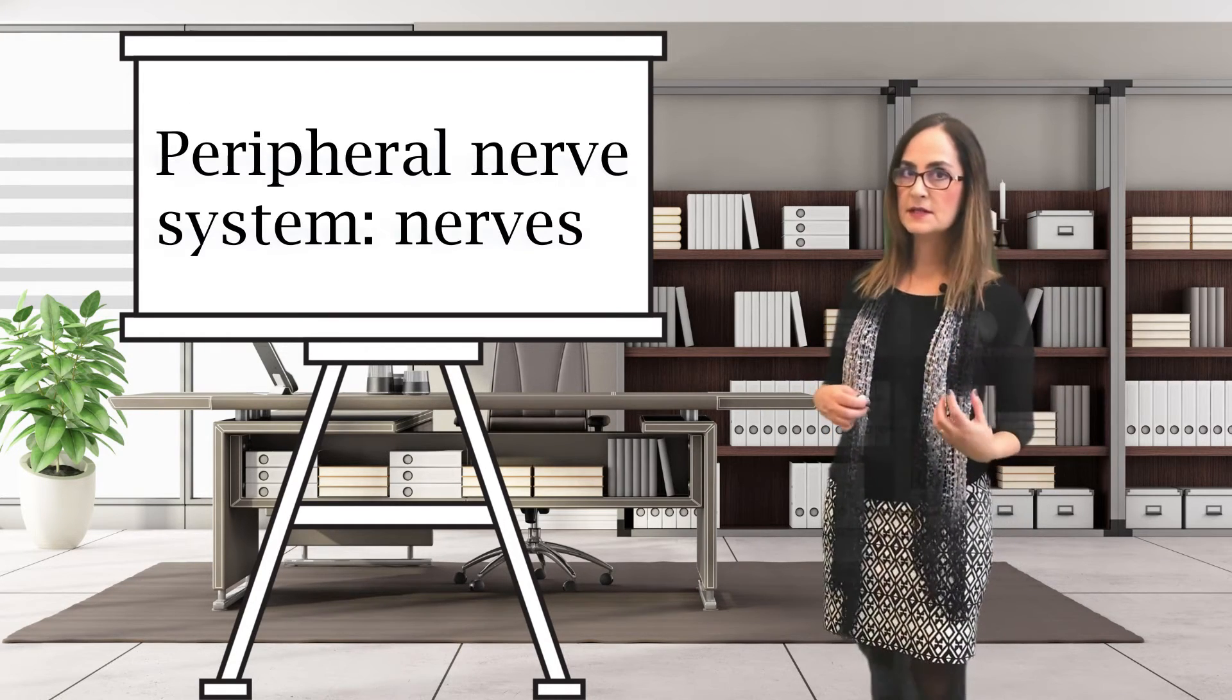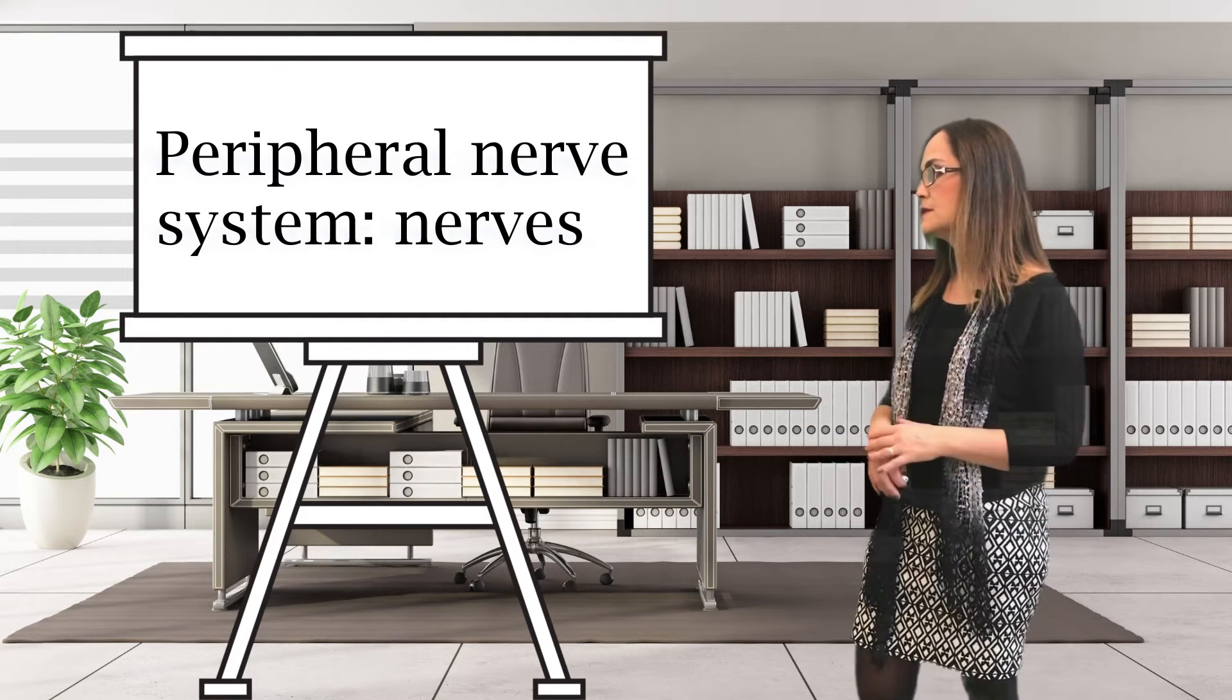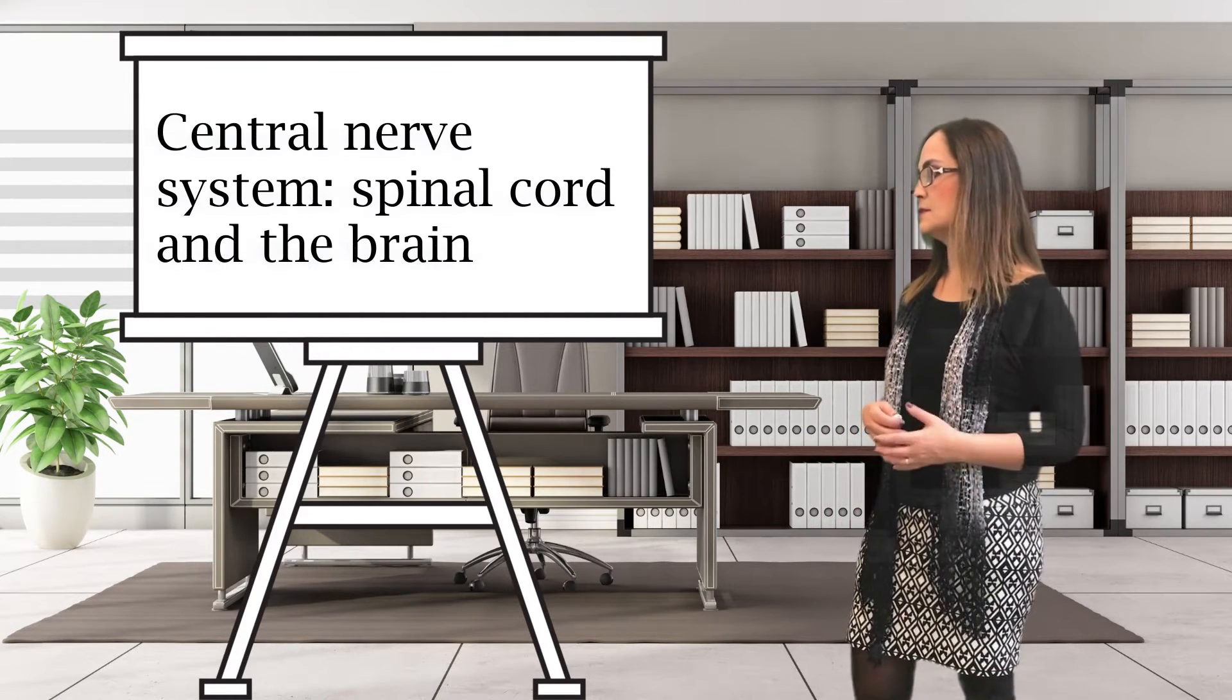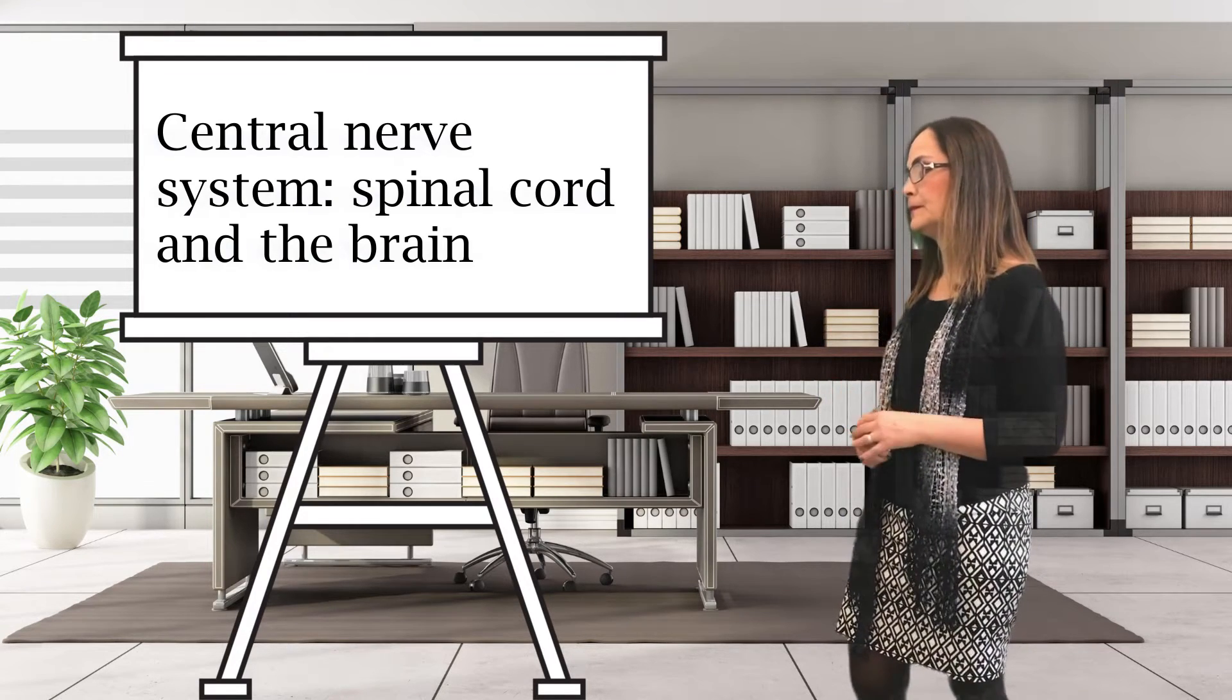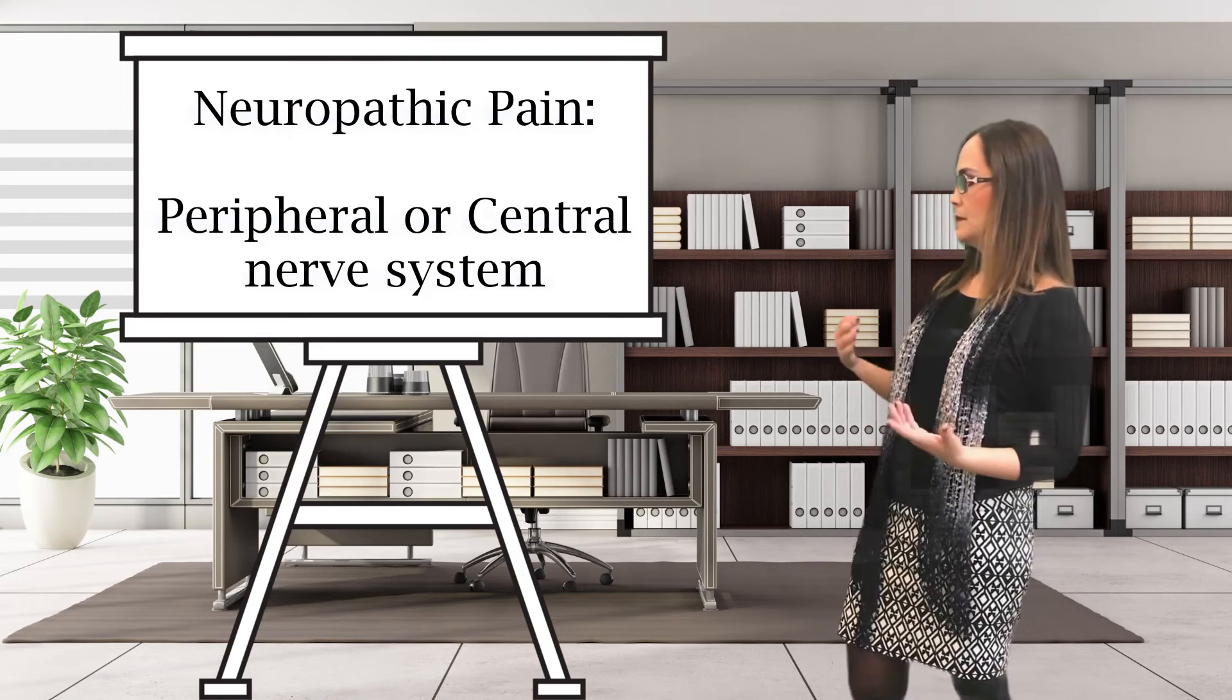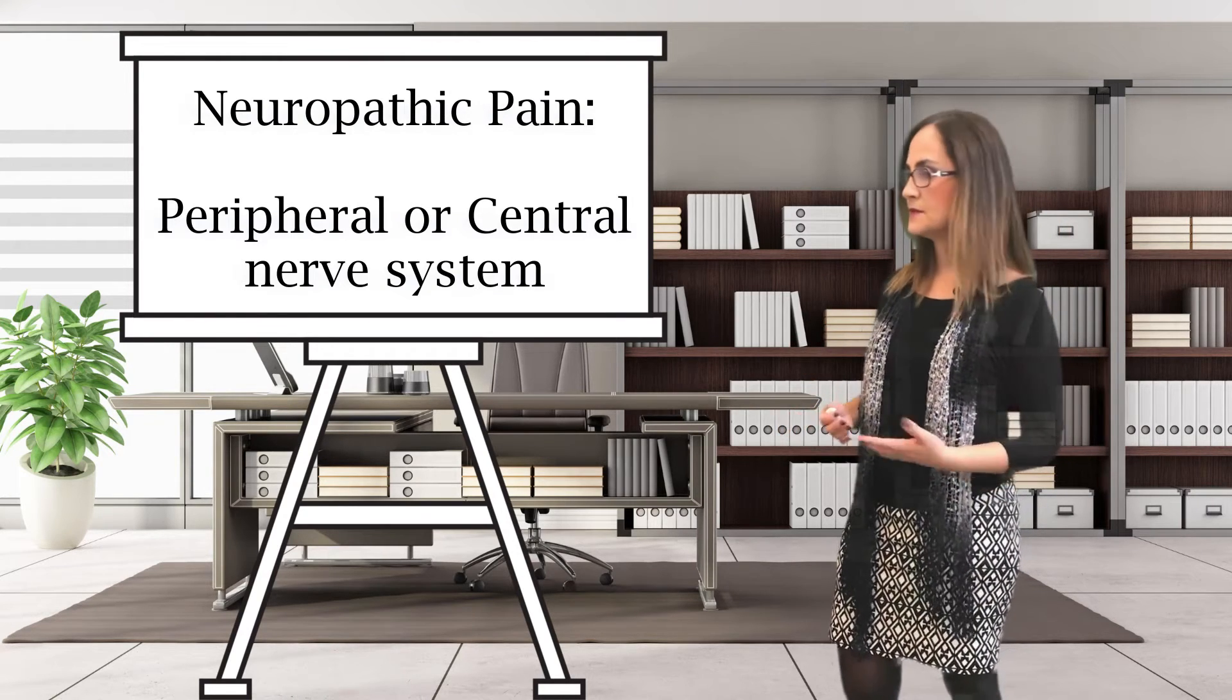The peripheral nerve system is formed by the nerves, the peripheral nerves, and the central nerve system is basically the spinal cord and the brain. So neuropathic pain can originate from the peripheral nerve system or the central nerve system.